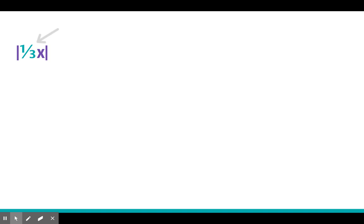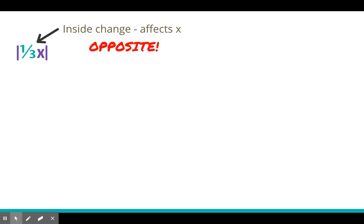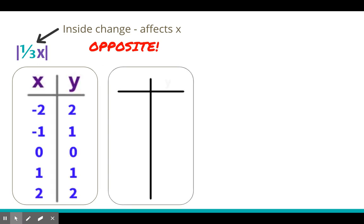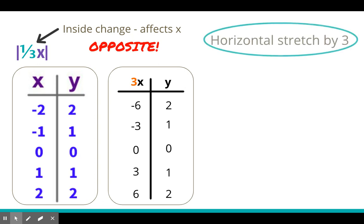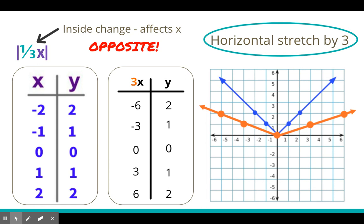Now we have absolute value of one-third x. It's on the inside, so it affects the x values. The inside is opposite, so it looks like we're dividing by 3, but we're actually going to be multiplying by 3. We have our parent table; nothing happens to the y's — there's nothing on the outside, so we copy them down. On the x's, it's opposite, so 3 times x: 3×(−2)=−6, 3×(−1)=−3, 3×0=0, 3×1=3, 3×2=6. So it looks like we're compressing, but it's actually a horizontal stretch by 3 — we're stretching it in the horizontal direction, and that's why it looks like it's getting wider.